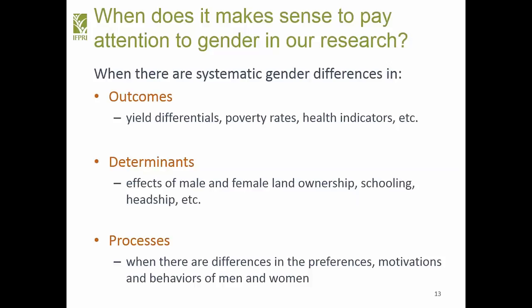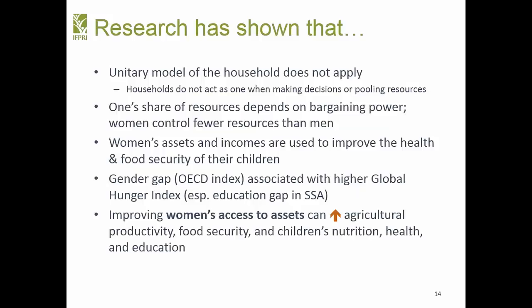The default assumption is no longer a unitary household. Studies have confirmed over and over that households do not act as one — individuals within the household have different preferences, resources, and interests. One's share of resources depends on their bargaining power. In general in many places, women control fewer resources than men. There's also evidence showing that women's assets and incomes are highly correlated with the health and food security of children — when women's incomes rise, those are directed towards children's outcomes.